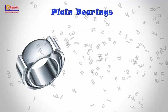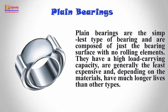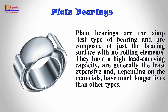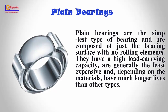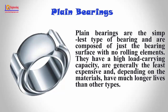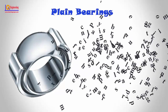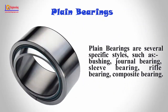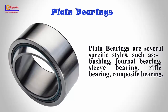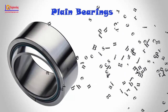Plain bearings are the simplest type of bearing and are composed of just the bearing surface with no rolling elements. They have a high load carrying capacity, are generally the least expensive and, depending on the materials, have much longer lives than other types. Plain bearings come in several specific styles, such as bushing, journal bearing, sleeve bearing, rifled bearing, and composite bearing.